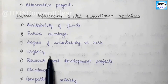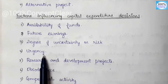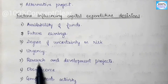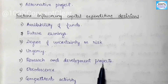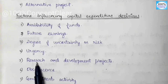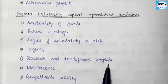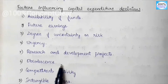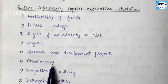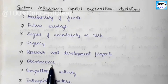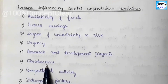The next factor is Urgency — some projects are very important for the survival of the firm, so those are taken on an urgent basis. Next is Research and Development Projects — we need new products, new methods, or new techniques, so R&D projects are a factor. Next is Obsolescence — a fixed asset used for many years depreciates and becomes obsolete, at which point we need to replace that fixed asset.